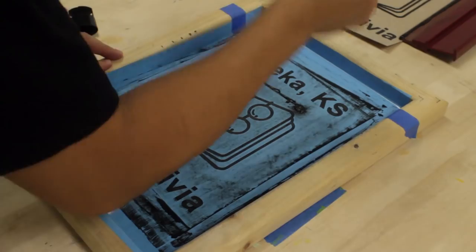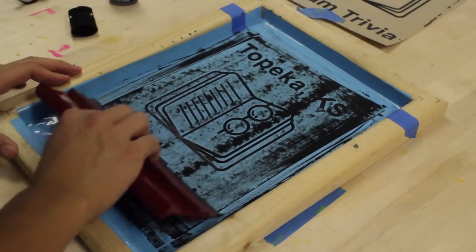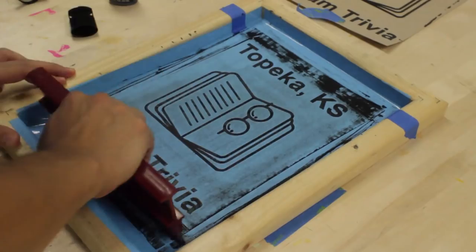And then I'm going to pretty poorly put the ink down. Good screen printers are going to do it way better than me, but I'm just going to show how to do it to get it to work. And then a couple passes. Pros do like one pass and they put a lot of ink at the top, but I just did it to show on this video.